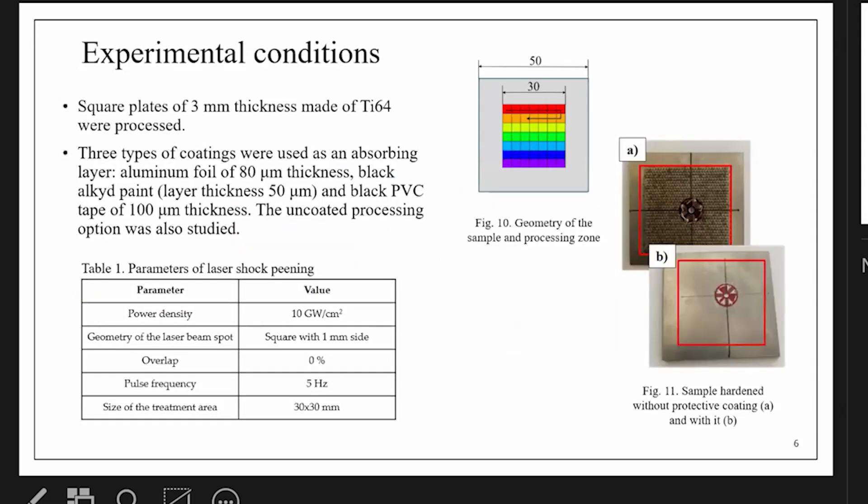And about experimental conditions. The samples were made from titanium alloy Ti-6Al-4V and represent thin square plates with a size of 50 millimeters and thickness of 3 millimeters. You can see the processing parameters on the screen.